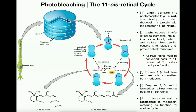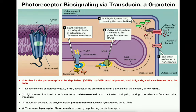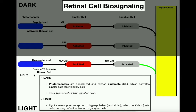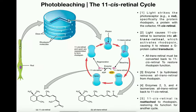If you suddenly stopped this process, you would eventually go blind — light blindness — because you would never be regenerating the 11-cis-retinal, and the function of the photoreceptors would fail. They would never be able to do another cycle. Eventually, bipolar cells would remain activated and ganglion cells would remain inhibited.